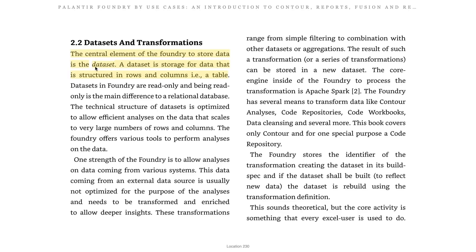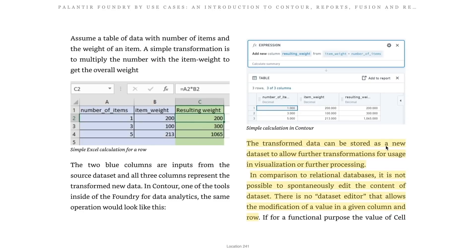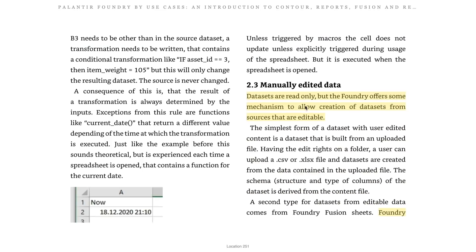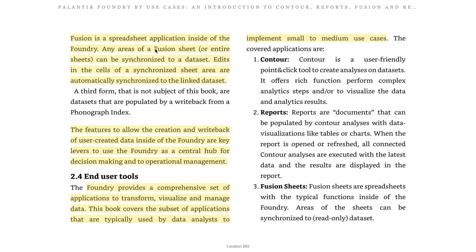The central element of Foundry to store data is the data set — storage for data structured in rows and columns, i.e., a table. Transformed data can be stored as a new data set for further transformations, visualizations, or processing. In comparison to relational databases, it is not possible to spontaneously edit the contents of a data set — data sets are read-only. However, Foundry offers mechanisms to allow creation of data sets from editable sources. Foundry Fusion is a spreadsheet application inside Foundry; any areas of a Fusion sheet can be synchronized to a data set, so edits are automatically synchronized to the linked data set. These write-back features are key levers to use Foundry as a central hub for decision-making and operational management.